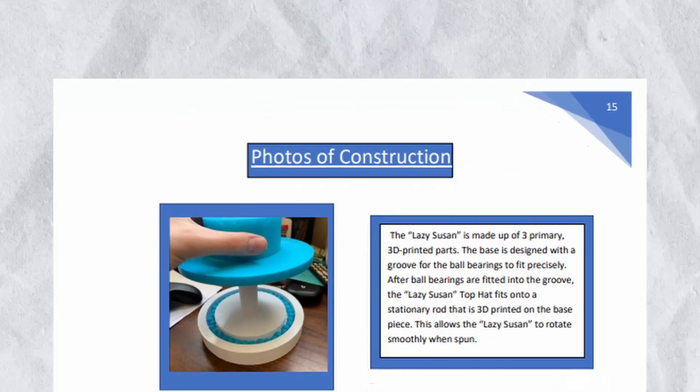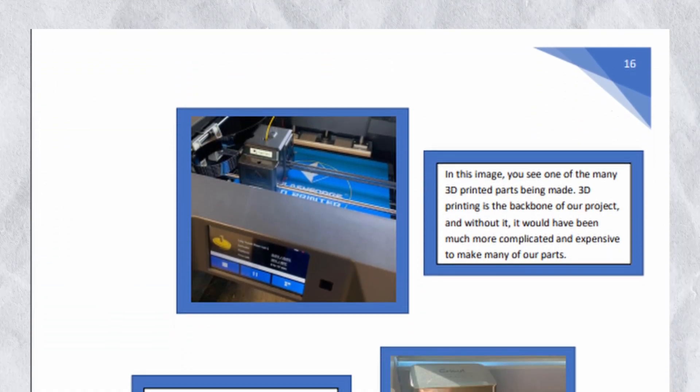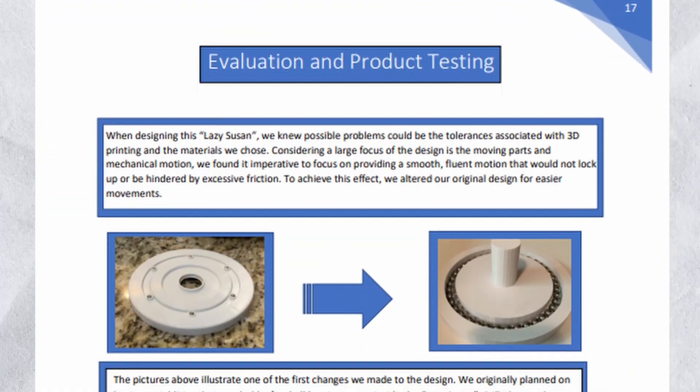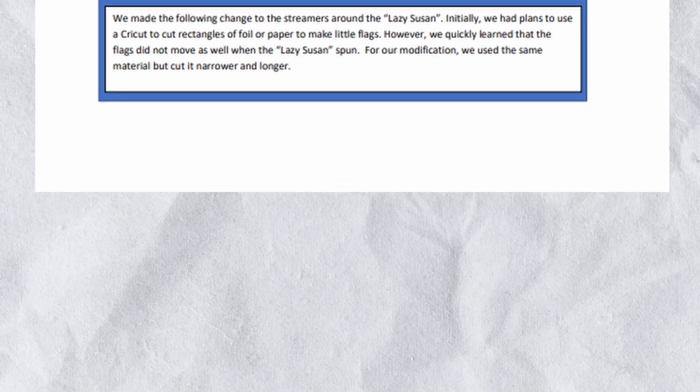For construction, start with your base and work up piece by piece, taking pictures as you go. Make sure to document any manufacturing machines you use, as typically you require two of these. Also be sure to show any changes you make throughout your design process. Changes will come naturally in your process, so don't try and force it.